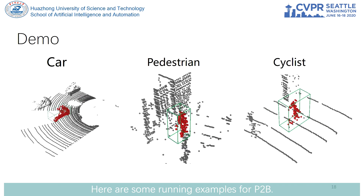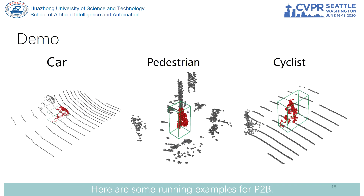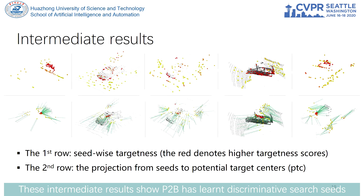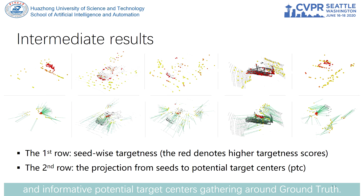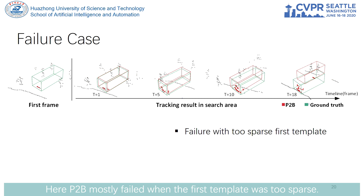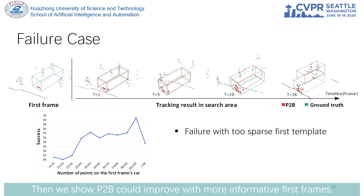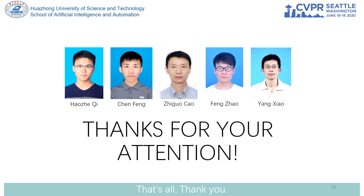Here are some running examples for P2B. These intermediate results show that P2B has learned discriminative search seeds and informative potential target centers gathering around the ground truth. P2B mostly failed when the first template was sparse, and we show P2B could improve with more informative first frames. That's all, thank you.